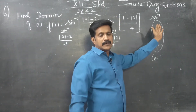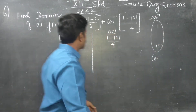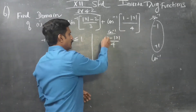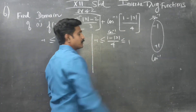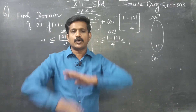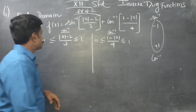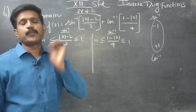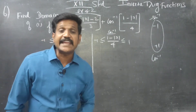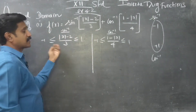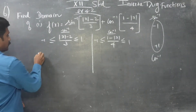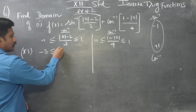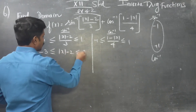The sine inverse range has minimum minus 1 and maximum plus 1. So the condition is: minus 1 less than or equal to mod x minus 2 by 3, less than or equal to plus 1. That is the cos inverse condition as well — minimum value minus 1 and maximum value plus 1. The denominator is 3, which is a positive number, so we can comfortably multiply by 3. Multiplying by 3, we get minus 3 less than or equal to mod x minus 2 less than or equal to plus 3.